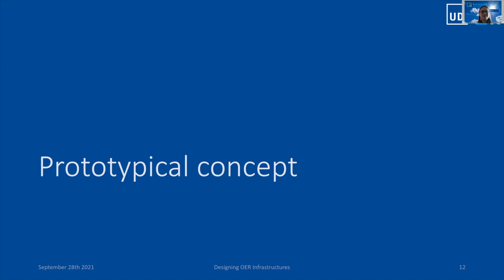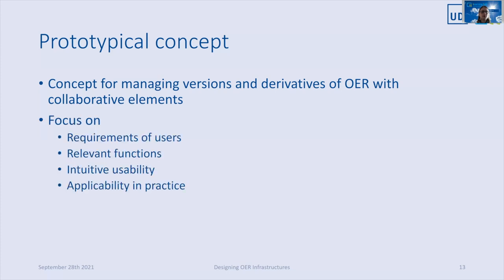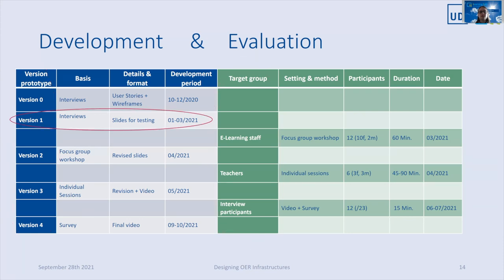Based on these results and analyzed version management functions, we developed a prototype concept for managing versions and derivatives of OER with collaborative elements. We focused on requirements of users, relevant functions, intuitive usability, especially comprehensible terms and arrangements, as well as usage and practice. What we didn't focus on are design elements and technical implementation. The development of the prototype comprised four versions, including a three-stage iterative evaluation process based on the interview results. The first version was created and prepared for testing.